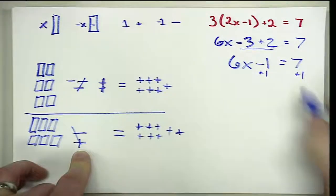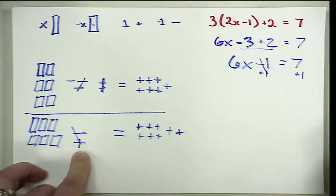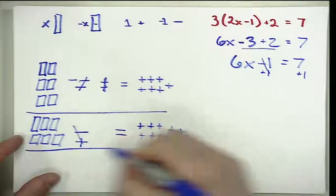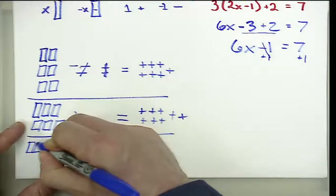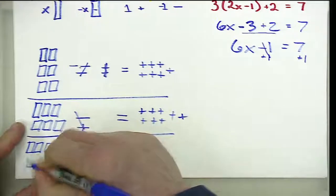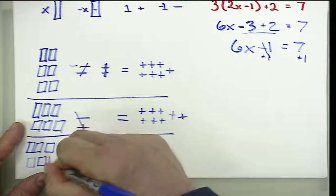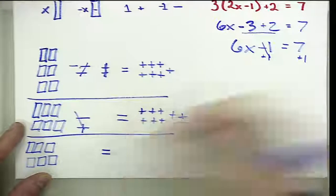And so this cancels out just like it does in the abstract. And once again, we are going to redraw, and this is going to be 6X is equal to...